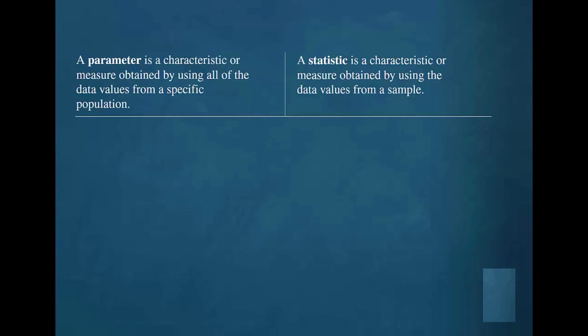It is of the utmost importance that correct notation is utilized when reporting statistical measures. We will look at a few examples of the notation used for corresponding population and sample measures. The Greek letter mu is used to represent a population mean. The symbol x bar is used to represent a sample mean.